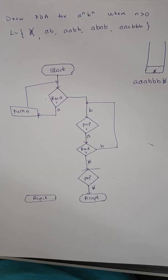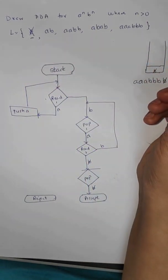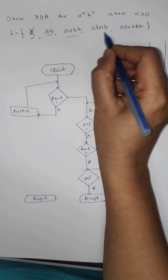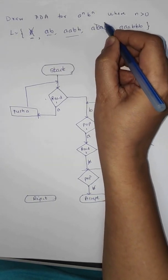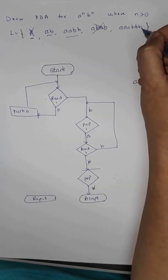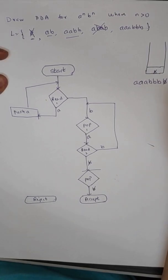Let us draw a PDA for the language a^n b^n where n is greater than zero. That means the null string is not a valid string. Valid strings are: ab, aabb, aaabbb — note that 'abab' contains equal numbers of a's and b's but is not of the form a^n b^n, so it will not be accepted. Triple a, triple b, and many more such strings are possible.